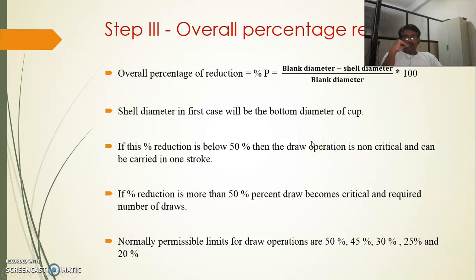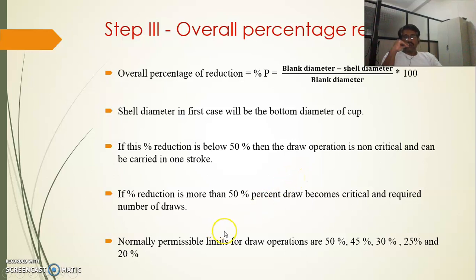Step three is the overall percentage reduction, which is very important. The overall percentage reduction P is given by the formula: P = (blank diameter − shell diameter) / blank diameter × 100. If this percentage is more than 50%, the operation is critical. If less than 50%, we can go with a single-stroke application. If the first-step reduction exceeds 50%, we must consider the normal permissible limits: 50%, then 45%, then 30%, then 25%, and 20%. Every draw operation should be within these permissible limits.